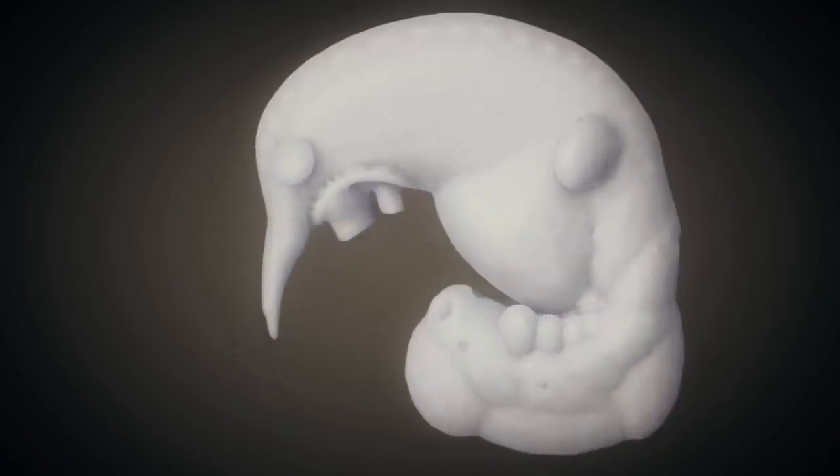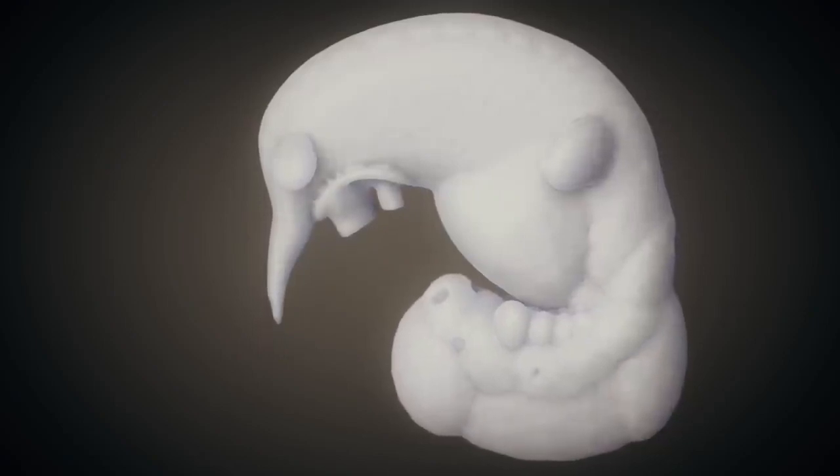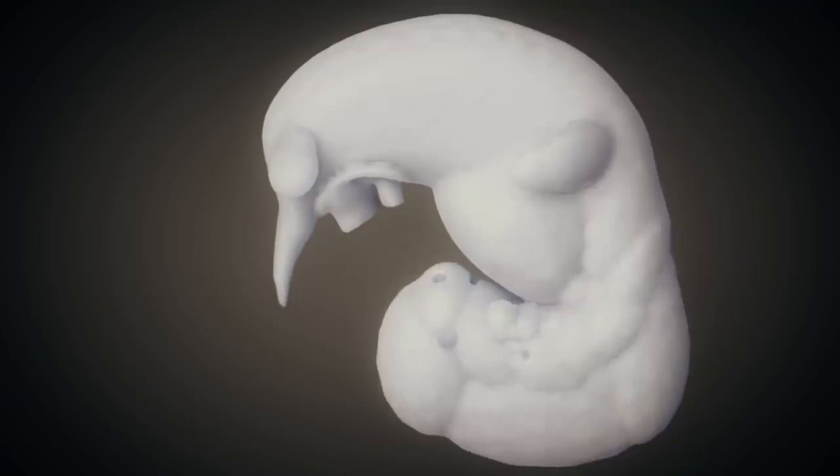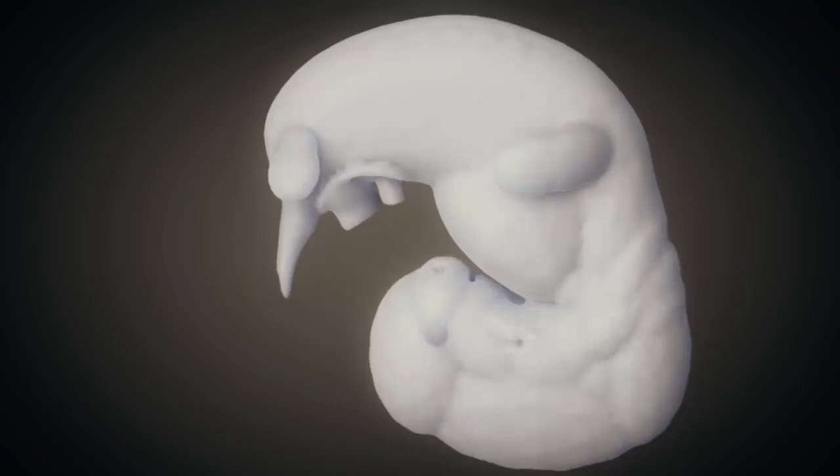The embryo continues to grow rapidly, measuring approximately 4 to 5 mm by the end of the fourth week. The lens placodes and olfactory pits are formed. The later arms and hands, as well as legs and feet, can be already well identified. The hands will develop from paddles to separate fingers by the eighth week.